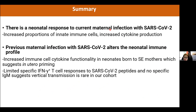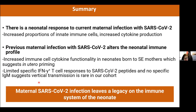To summarize: there is a neonatal response to current maternal SARS-CoV-2 infection seen as increased innate immune cells and cytokine production. There is also a response to maternal infection whenever it occurred during pregnancy, reflecting increased immune cell cytokine functionality suggesting in utero priming of the infant immune system. This did not appear to be SARS-CoV-2-specific — no real responses to SARS-CoV-2 peptides were detected in infants — and no IgM was found, confirming no vertical transmission in the vast majority.